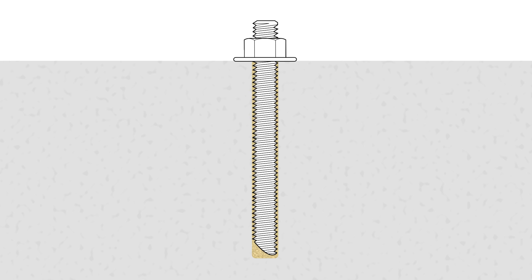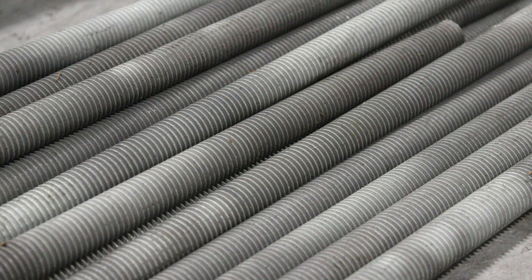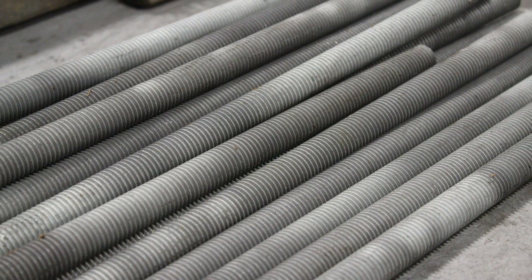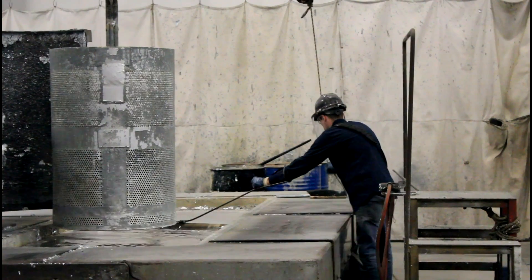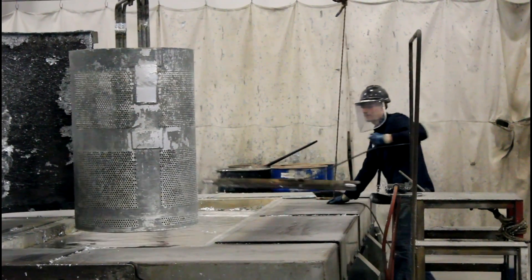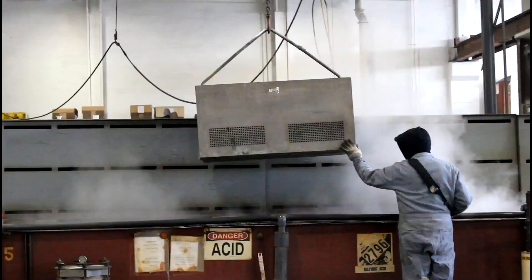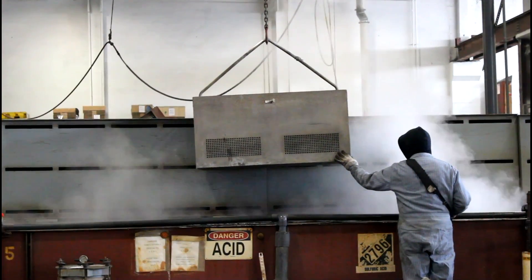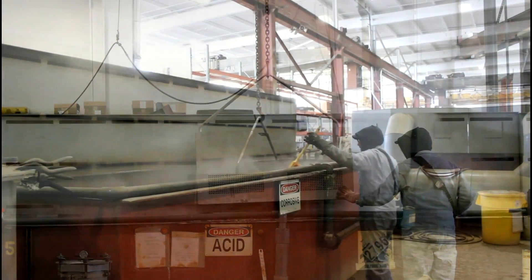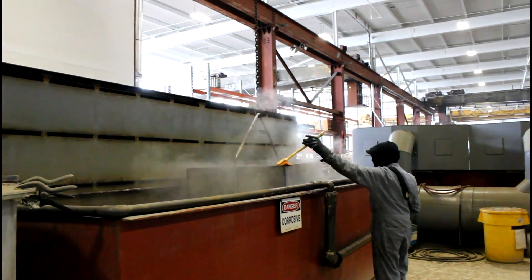If the rods are being used in outdoor applications, they will likely need to have a galvanized coating to protect against corrosion. It is important that the all-thread rod be galvanized in a system specifically designed for threaded fasteners. The rods undergo caustic soda, sulfuric acid, and flux solution baths to prepare the steel to bond with the molten zinc.